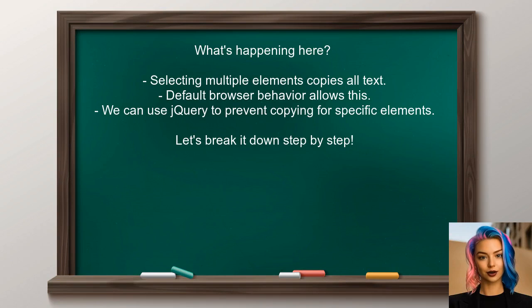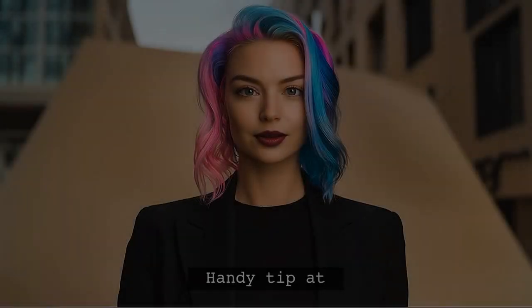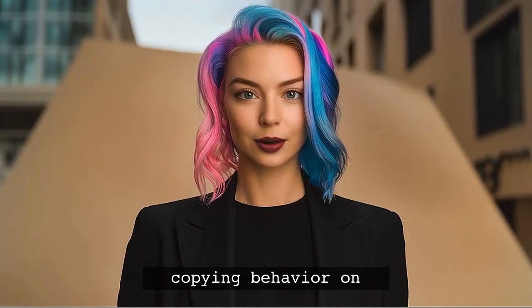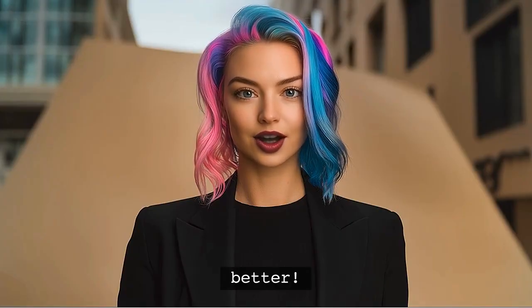When you select multiple elements, the default behavior of the browser allows all selected text to be copied. However, with a little jQuery magic, we can prevent that for specific elements. Let's break it down step by step. And stick around — I've got a handy tip at the end that will help you manage copying behavior on your web pages even better.